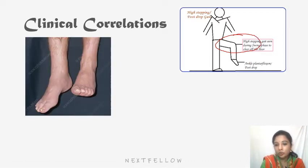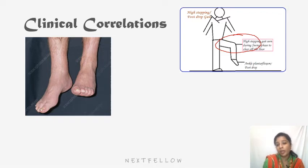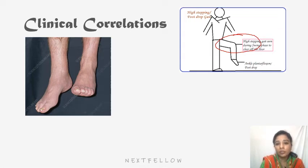Foot drop occurs due to damage to the common peroneal nerve because the anterior compartment muscles of the leg are all paralyzed. There is paralysis of the anterior leg — that is, loss of dorsiflexion of the foot — and loss of toe extension because extensor digitorum, extensor hallucis longus are also paralyzed. There will also be loss of foot eversion, due to involvement of peroneus longus and brevis muscle, as the superficial peroneal nerve supplies peroneus longus and brevis. These patients cannot stand on the heel or walk with normal gait.